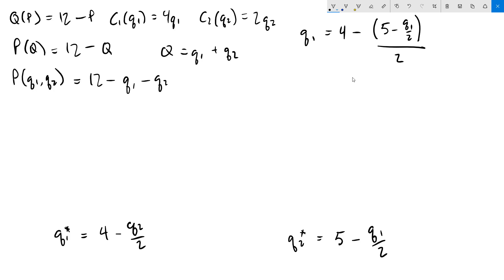I'll multiply everything by 2. 2q1 equals 8 minus 5 minus q1 over 2. Next step, we distribute the minus sign. We get 8 minus 5 is 3, and then plus q1 over 2. Since there's two minus signs there, they become a plus. Subtract q1 over 2 from both sides to get 3 halves q1 equals 3. Multiply both sides by 2 thirds, we get q1 equals 2.